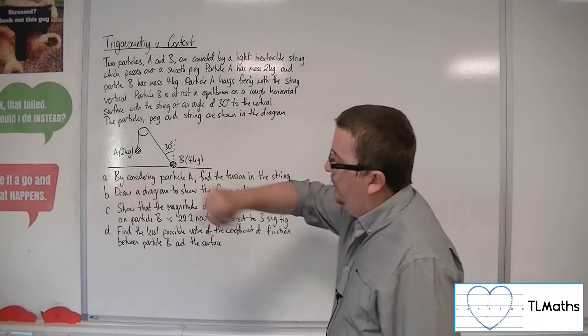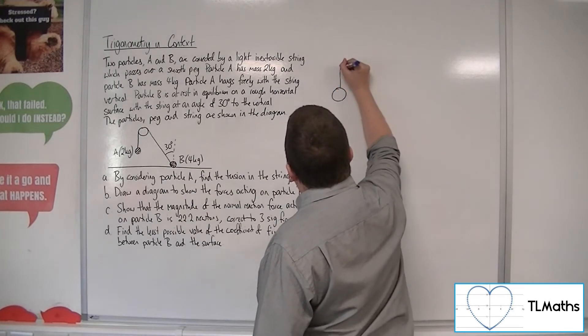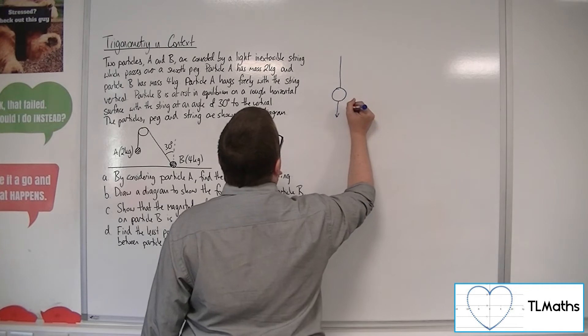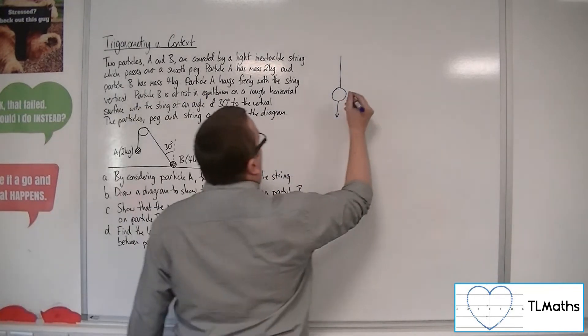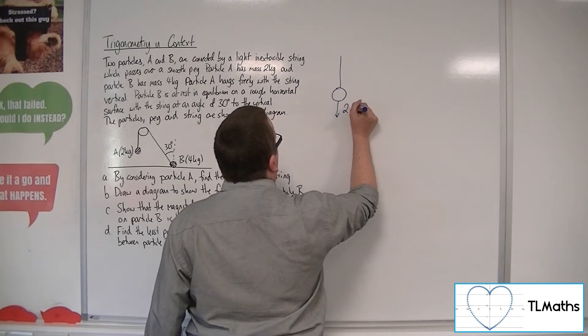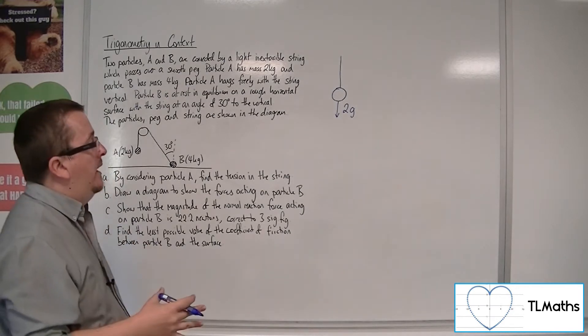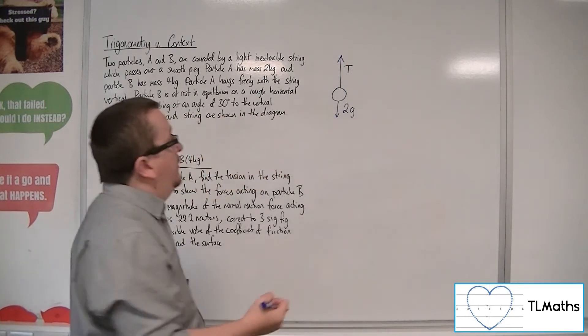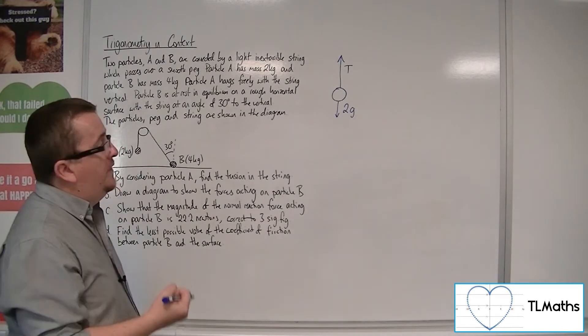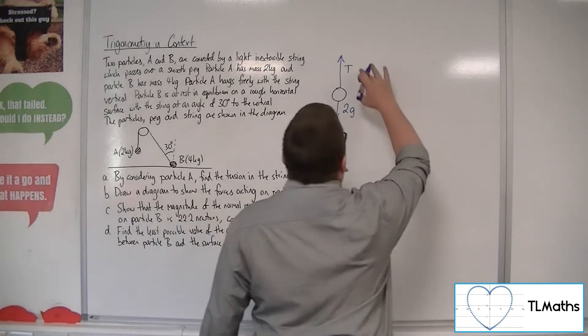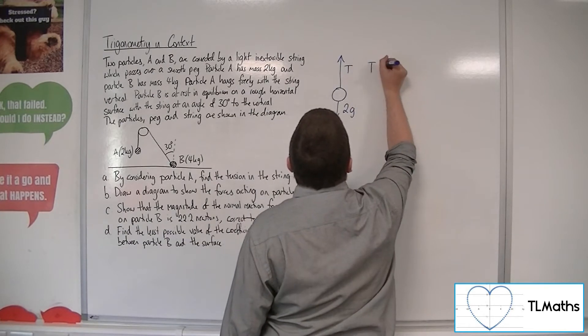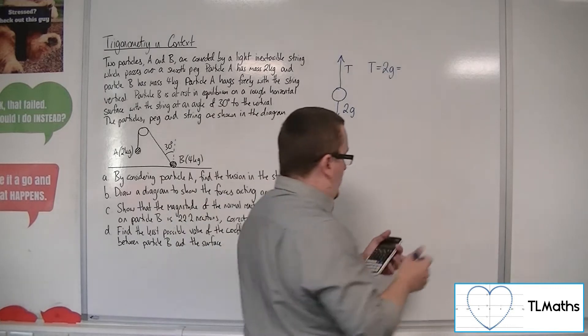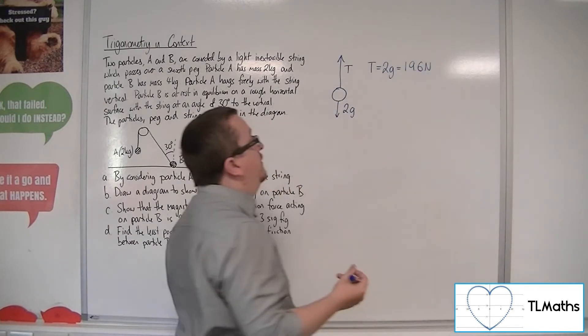So if we zoom in to particle A, here's particle A. Now this has a mass of 2 kilos, so that means that there is a force pulling it down of Mg, so 2g. Now I'm going to be taking g as 9.8 in this. So 2 lots of 9.8. And we're also going to have the string pulling against that, and that creates the tension force. So in order for this particle to be in equilibrium, the tension and the 2g must be the same. So T must be equal to 2g. So 2 lots of 9.8 gets me 19.6, and that will be newtons.